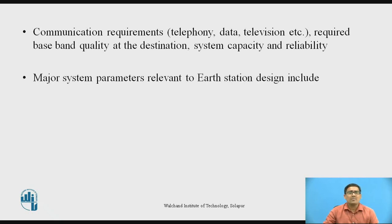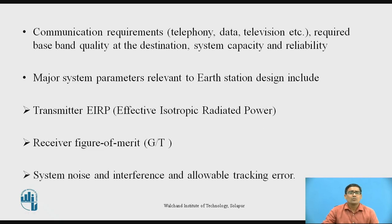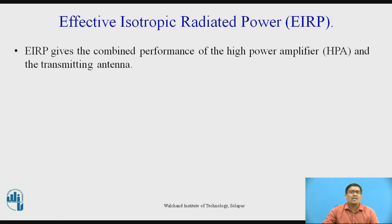The major system parameters relevant to Earth Station design include transmitter EIRP — EIRP means Effective Isotropic Radiated Power — and the receiver figure of merit, that is the G/T ratio. The transmitter EIRP is required at the transmitter side, while the receiver figure of merit is considered at the receiver side. System noise and interface allowable tracking error are also important. EIRP gives the combined performance of the HPA (High Power Amplifier) and the transmitting antenna.